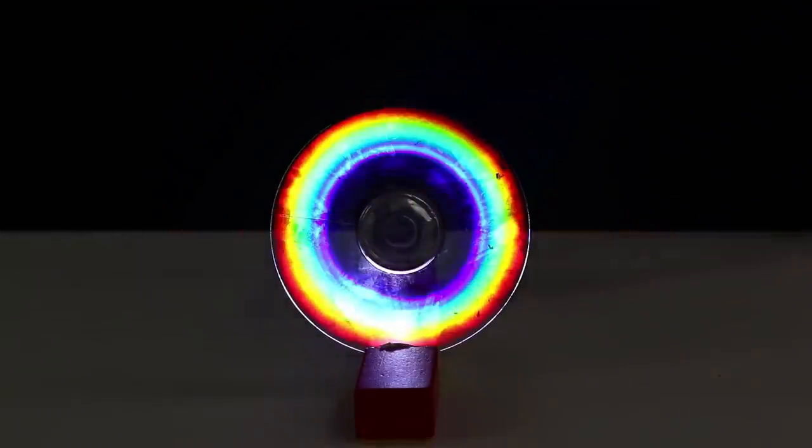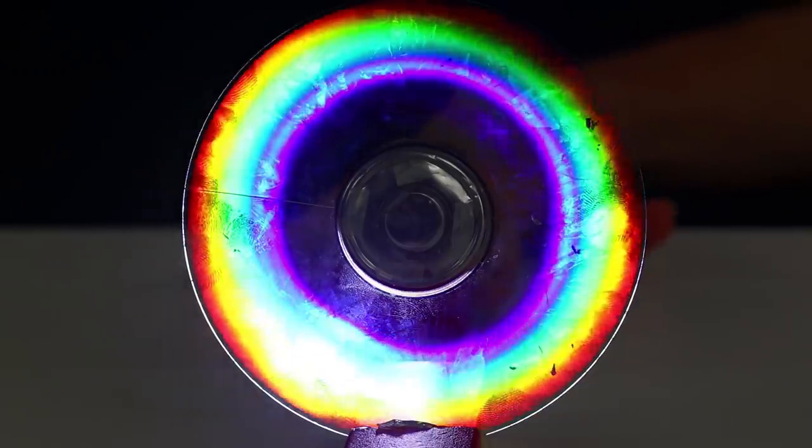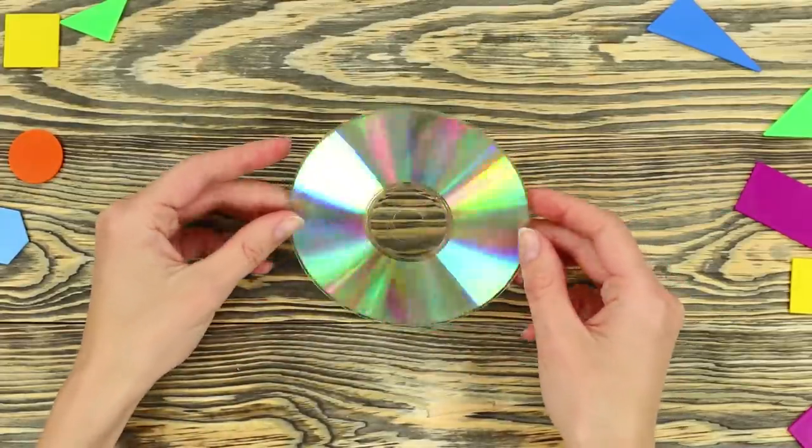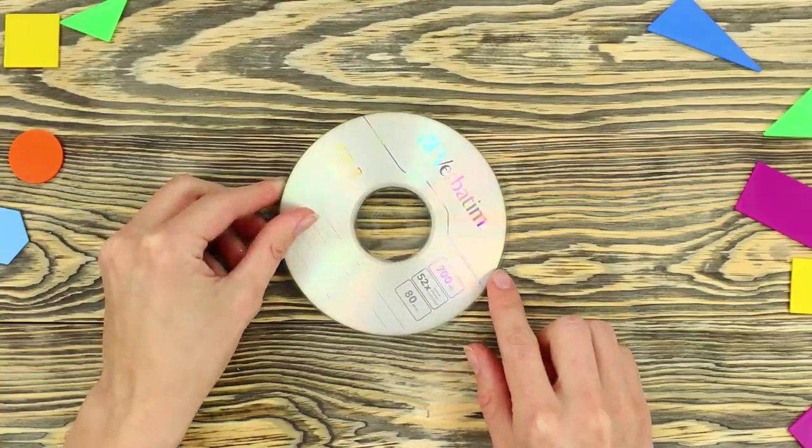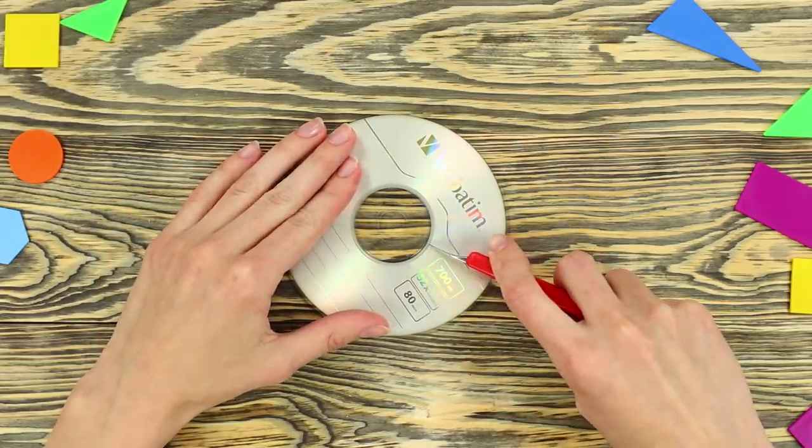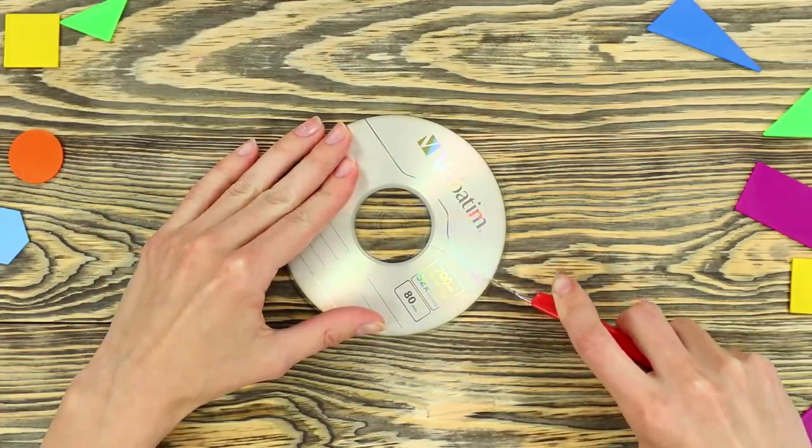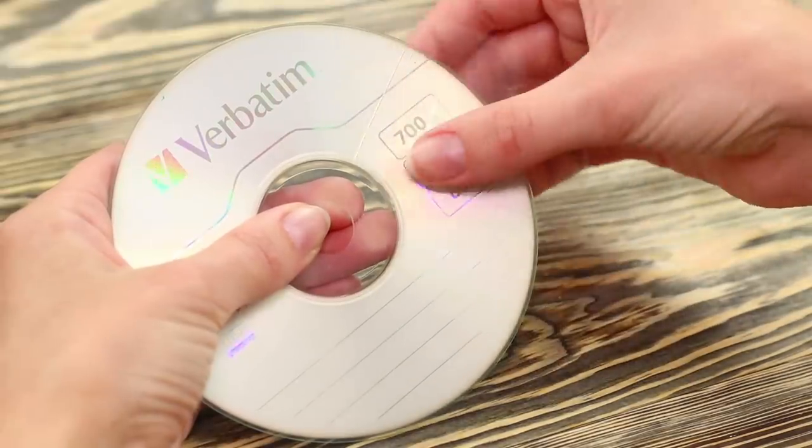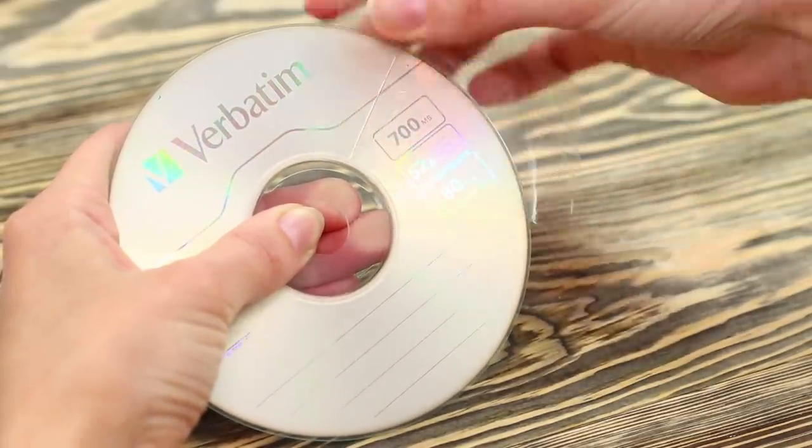A rainbow right in your room? What could be more romantic? For this experiment, you will need a regular CD-ROM. Let's remove the top layer from the disc. For this, you have to make a small incision on its surface. Glue a piece of scotch tape and cut it off sharply with the spraying.